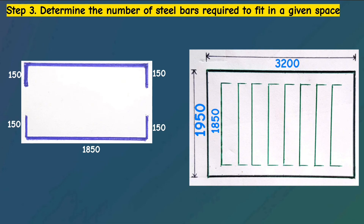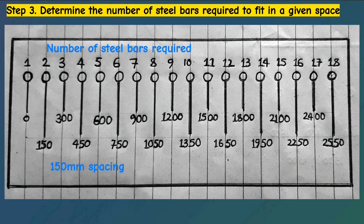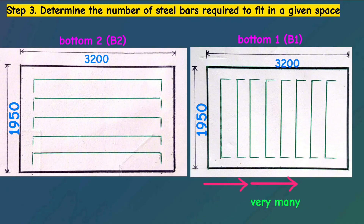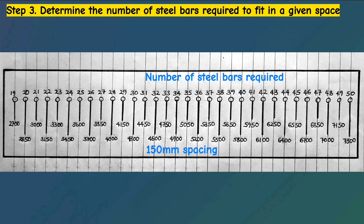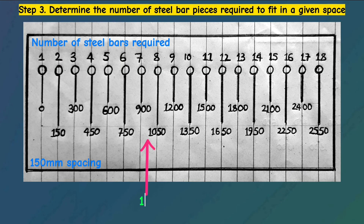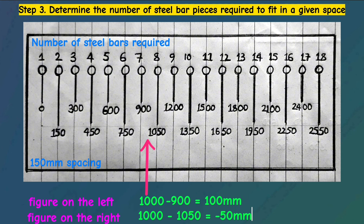To determine the number of steel bars needed for a certain distance, we use our reference table. For example, a spacing of 1.2 meters needs 9 steel bars; 3 meters needs 21 bars; 3.6 meters needs 25 bars. For a distance that falls between values — say 1 meter falls between 900mm and 1,050mm — we take the closest, which is 1,050mm, meaning we need 8 steel bars. Shorter steel bars will be more numerous as they cover the longer side; longer steel bars will be fewer as they cover the shorter side.